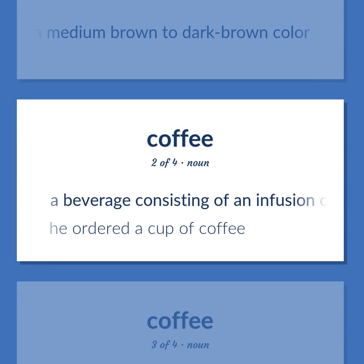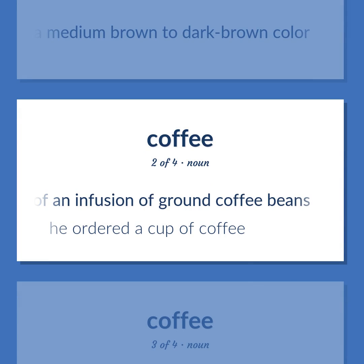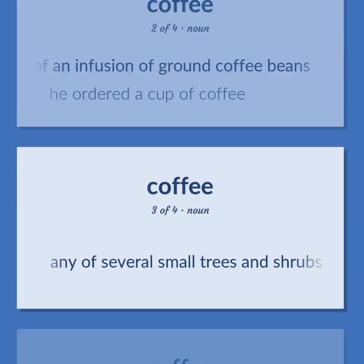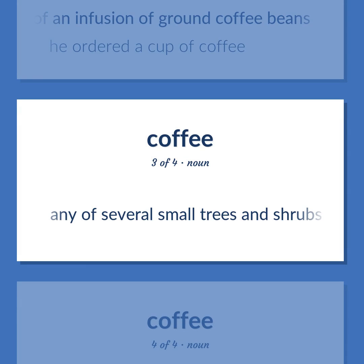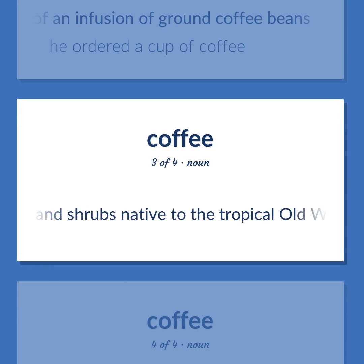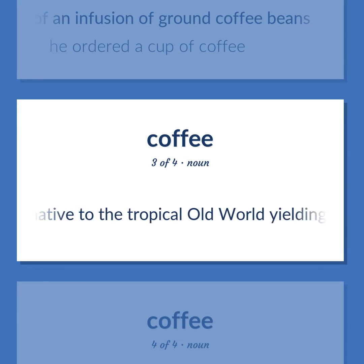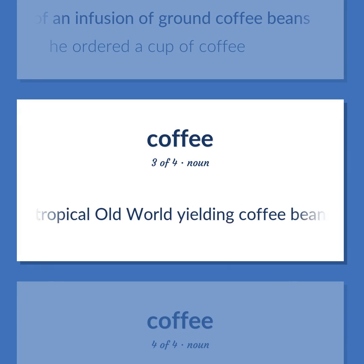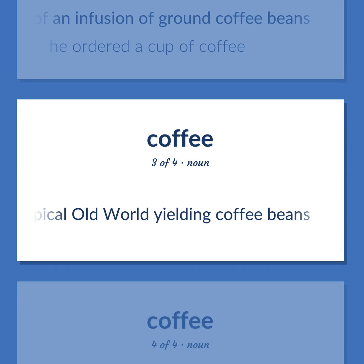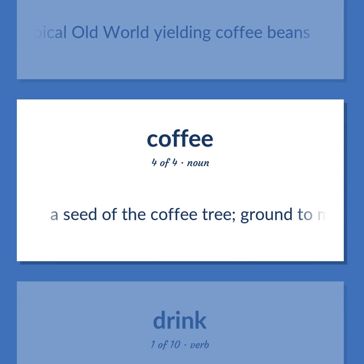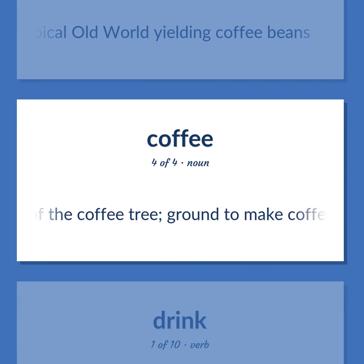Coffee: a beverage consisting of an infusion of ground coffee beans. Example: He ordered a cup of coffee. Any of several small trees and shrubs native to the tropical old world yielding coffee beans. A seed of the coffee tree, ground to make coffee.